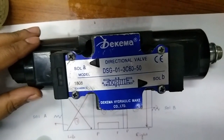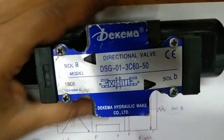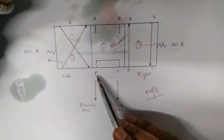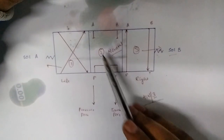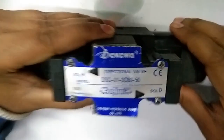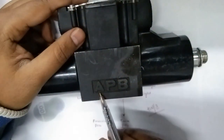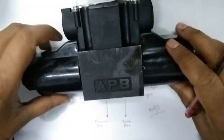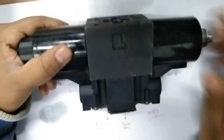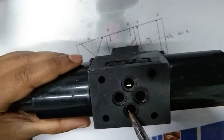Now we will conduct a very simple experiment on the valve. This is the same diagram we discussed before — P and T are interconnected, while A and B are disconnected. Here are the ports: this is A, this is P, this is B, and here at the bottom is the T port.